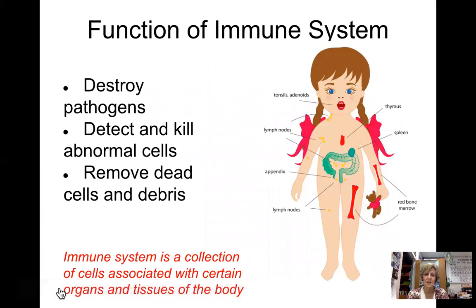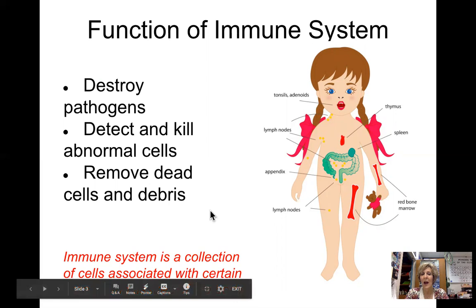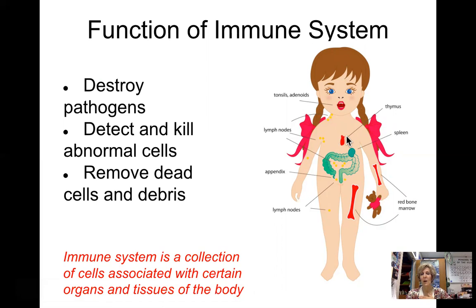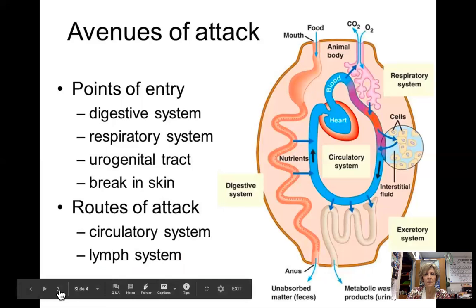The immune system is a body system, just like your digestive or respiratory system, but it is a system of cells and a few organs that work together to destroy pathogens. Their job is to detect and kill abnormal cells as well, and to remove dead cells and debris. The organs include the thymus — a large organ over your heart that shrinks with age — the spleen, lymph nodes, your appendix, tonsils, adenoids, and bone marrow.